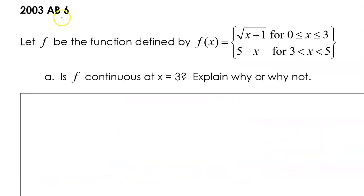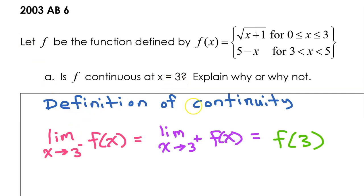Let's move on to free response question number 6 from the 2003 exam. Function f is defined by a piecewise function, and we have to figure out if it is continuous at x equals 3. According to the definition of continuity, if f is continuous at x equals 3, then the limit as x approaches 3 from the left must equal the limit as x approaches 3 from the right, which must also equal the value of the function at 3. Let's find each of these three things and see if they are all equal.